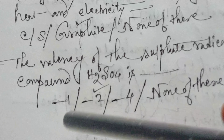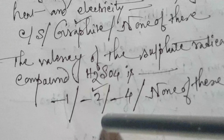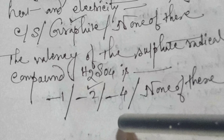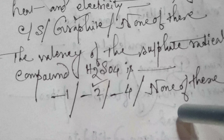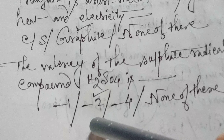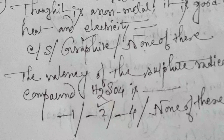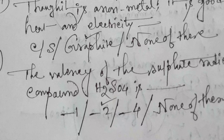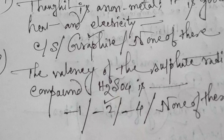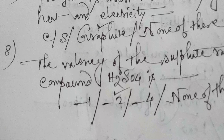Last question: the valency of the sulfate radical is minus 1, minus 2, minus 4, or none of these. The answer is minus 2. So students, hope all of you understood. For today, up to this portion.